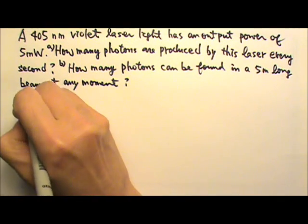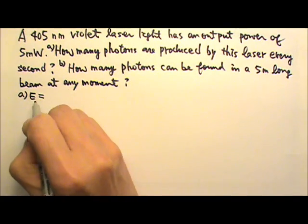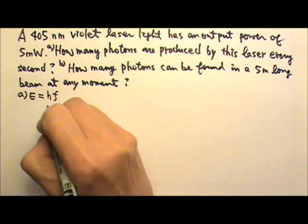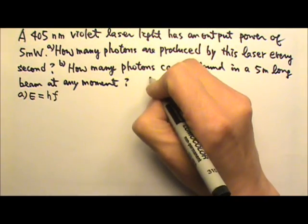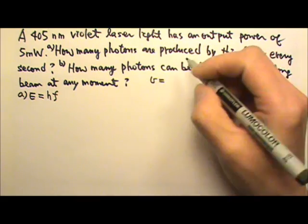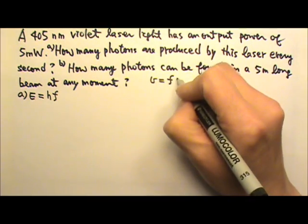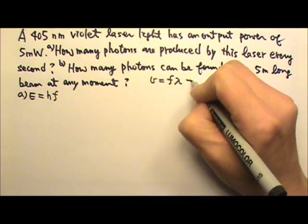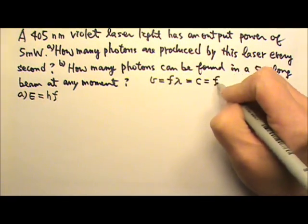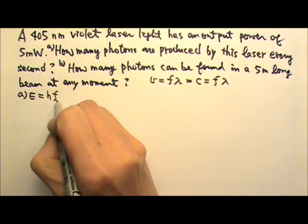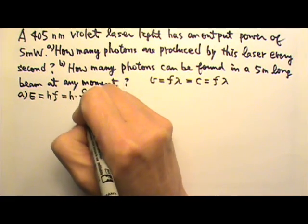For part A, let's first find the energy of one single photon, which is E equals hf. Now we were given the wavelength, not the frequency. If you remember from the waves unit, we have the speed of a wave equals frequency times wavelength. So for the speed of light, c equals frequency times wavelength. The frequency would be c divided by the wavelength, so this would be h times c over lambda.